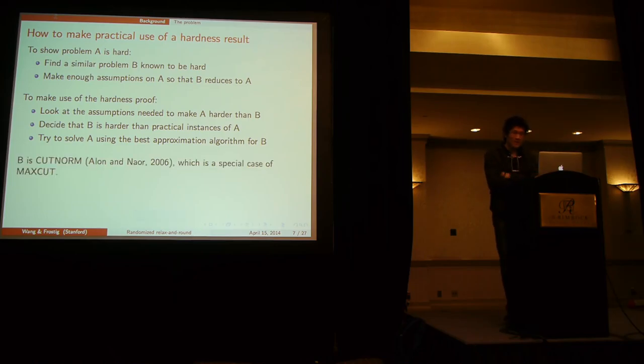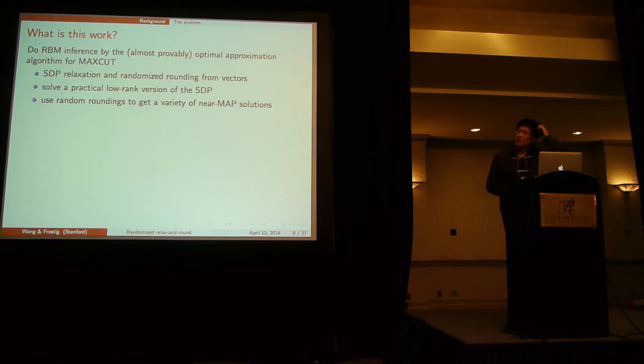So in this case the reduction was reducing from the cut problem, which is a special case of the max cut problem. This is studied in fair detail by Alon and Naor in 2006. So that's what this work is about. We do inferencing RBMs by the almost provably optimal approximation algorithm.